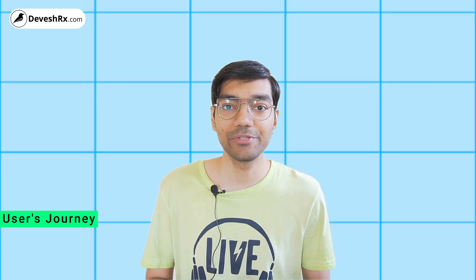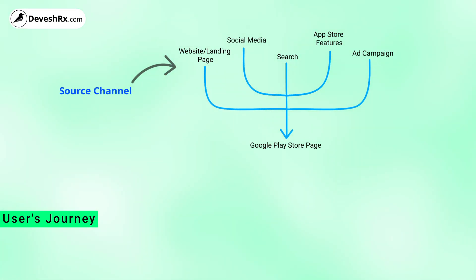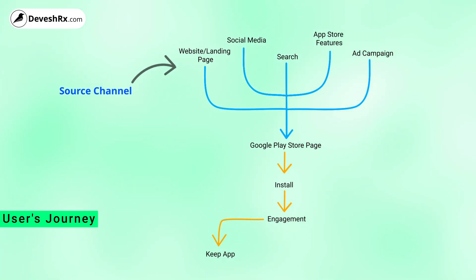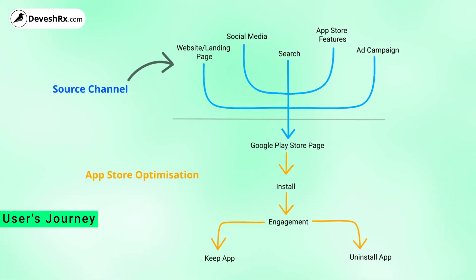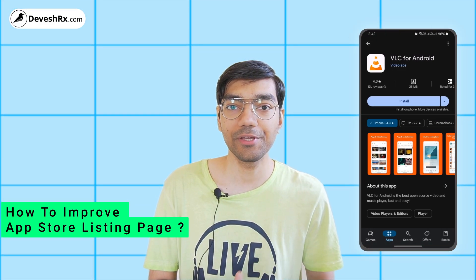First, let's understand the user journey from discovering your app to installing it. A typical user journey starts with the source channel — this can be your website, landing page, search results, ad campaign, etc. From the source channel, the user lands on Google Play Store and views the listing, then decides whether to install or not. After installing, the user creates engagement and then decides whether to keep the app or uninstall it. In ASO, you have to consider the entire journey from source channel to that final decision.